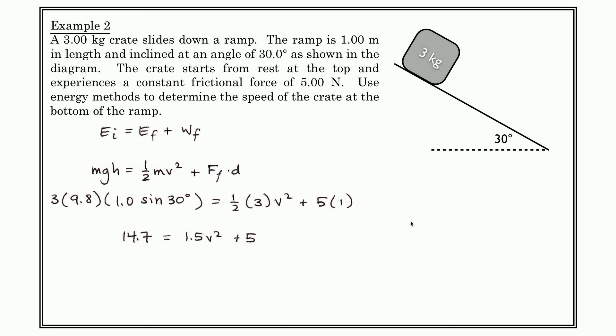So solving this and simplifying and moving numbers around, we get that the velocity or the speed of the crate at the bottom of the ramp is 2.54 meters per second.